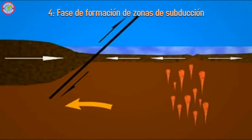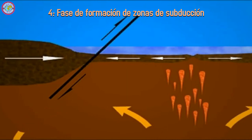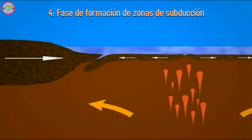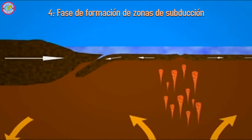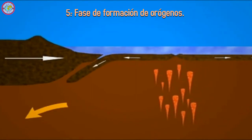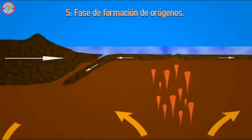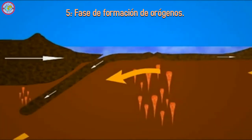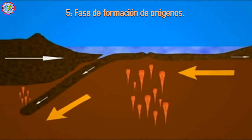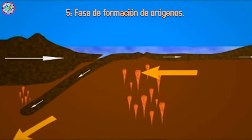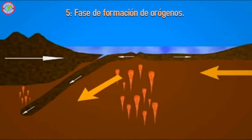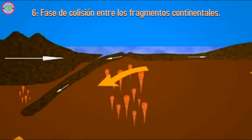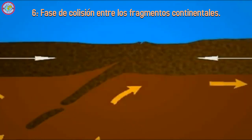Esto ocurre hasta que la interacción con otras placas invierte las fuerzas. En ese caso, se producen tensiones que rompen la litosfera oceánica y hacen que comience a hundirse en el manto. El nuevo borde de contacto pasa a ser convergente y el fondo del océano va reduciendo su extensión poco a poco hasta desaparecer, cuando las dos masas continentales de las placas colisionan y se reúnen de nuevo.